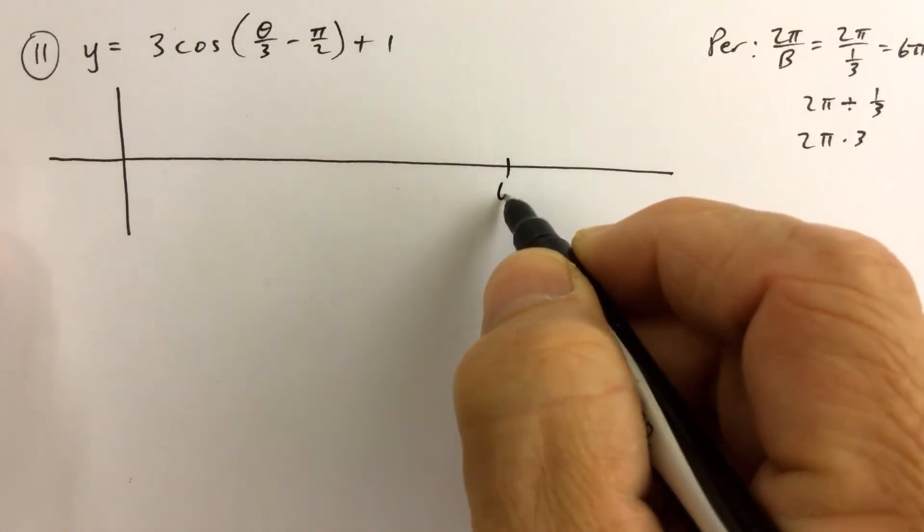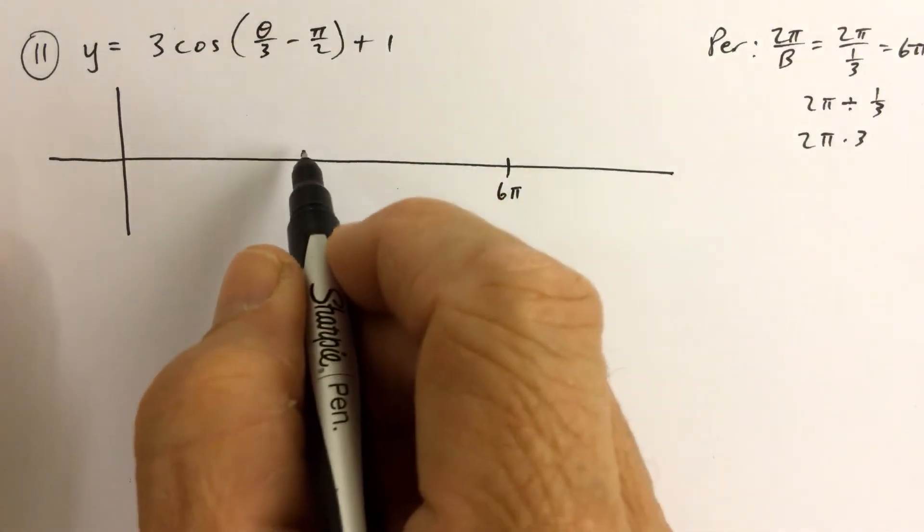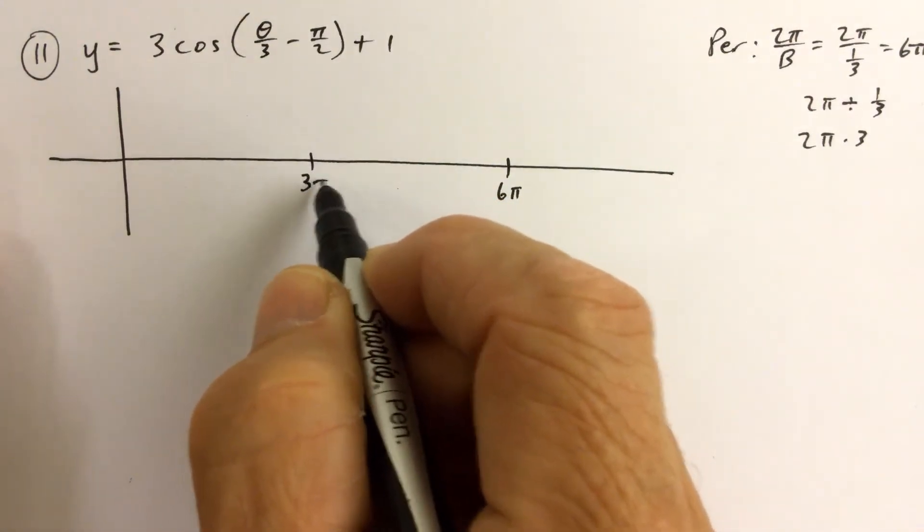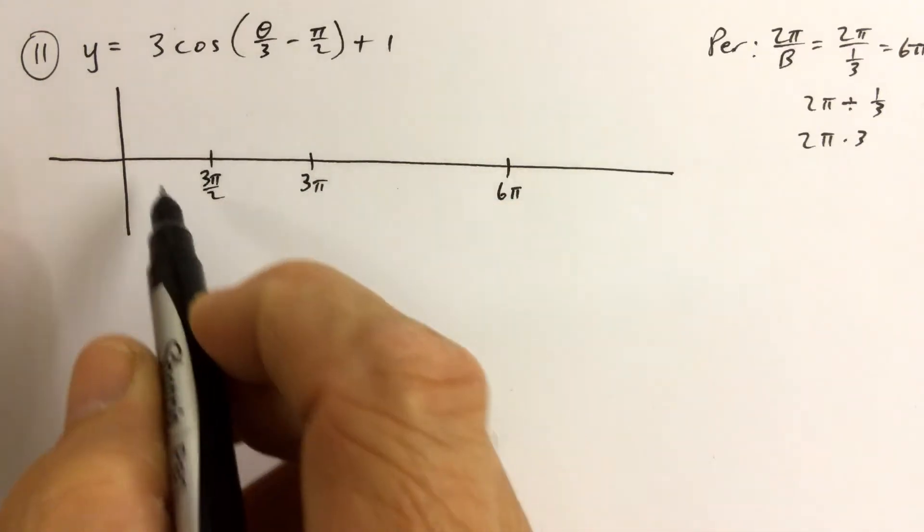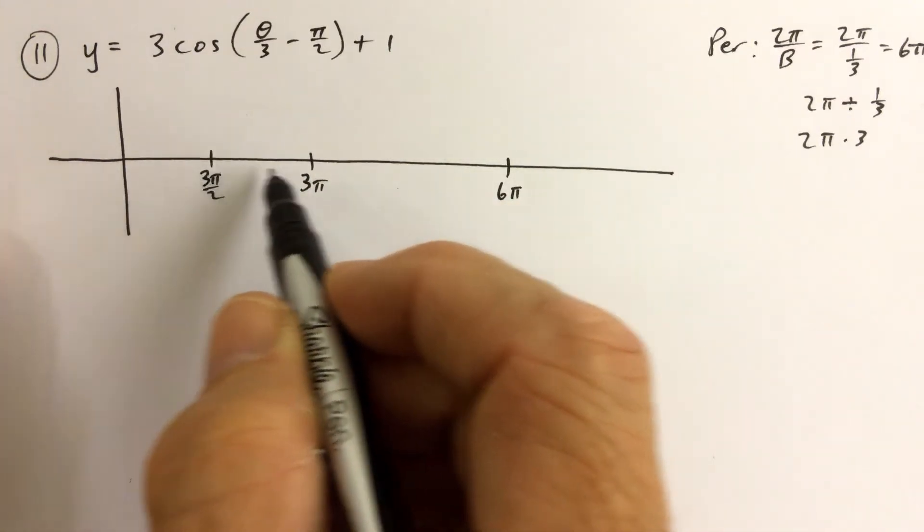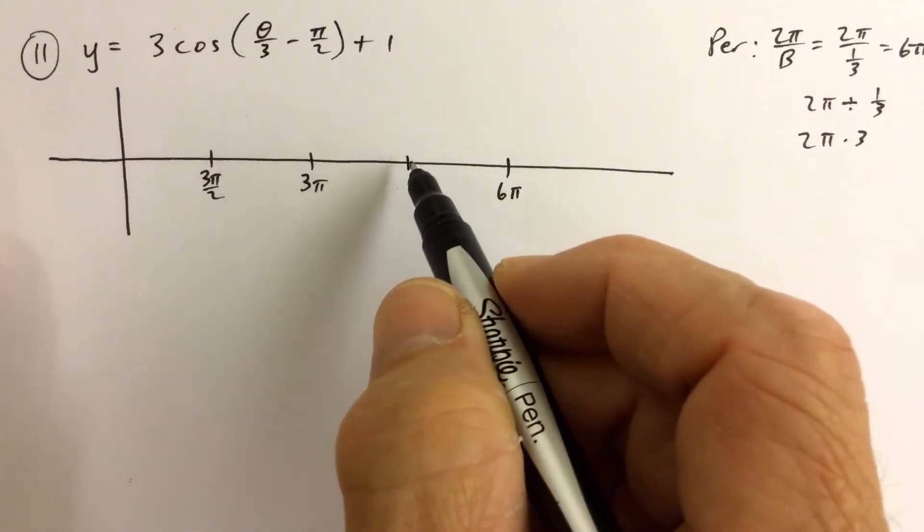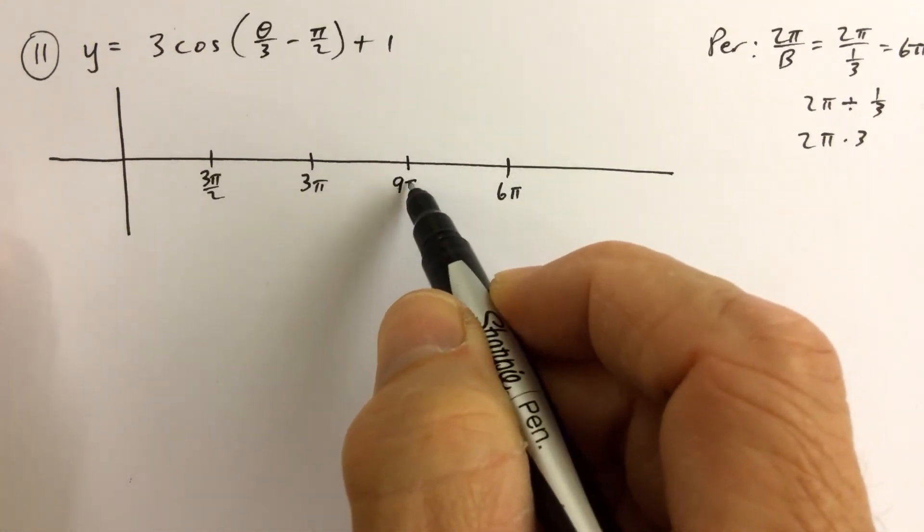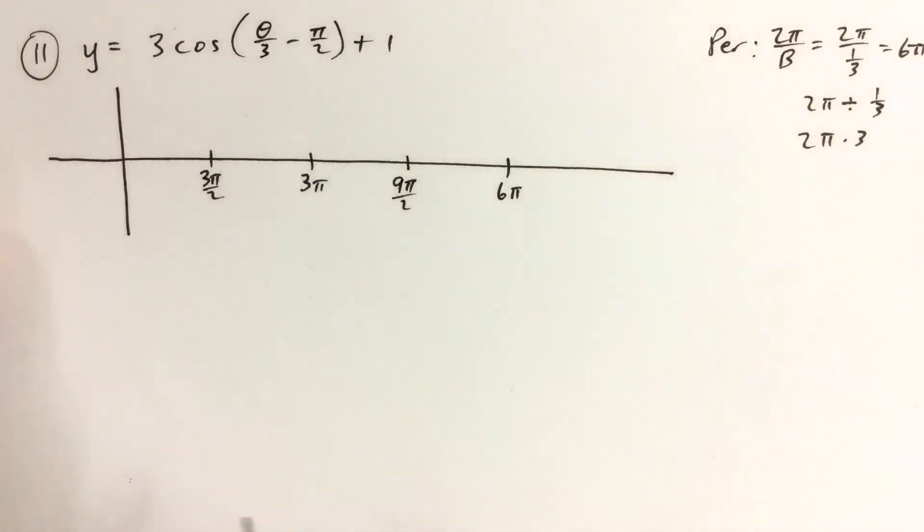And we're going to go ahead and mark that off. Cutting that in half we get 3π. Cutting that in half we get 3π over 2. So we have 3π over 2, 6π over 2, 9π over 2, 12π over 2. So we've got our x-axis or theta-axis marked off properly.